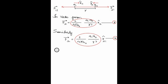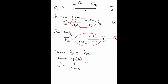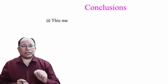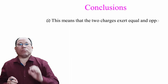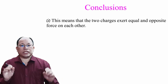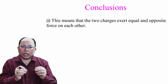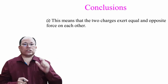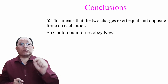r̂₁₂ and r̂₂₁ are in opposite directions, so r̂₂₁ = −r̂₁₂. After substituting these values in the above equations, we get F₂₁ vector = −F₁₂ vector. This means the two forces have the same magnitude but opposite directions. The two charges exert equal and opposite forces on each other — Coulomb's force obeys Newton's third law of motion.